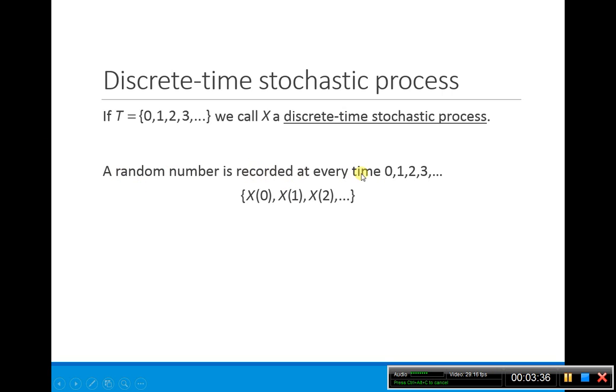A random variable is recorded at every time 0, 1, 2, 3. Since you've got the S suppressed, you think about X of T, so this is X of 0, X of 1, X of 2, and you have a random number that's recorded at every time step.